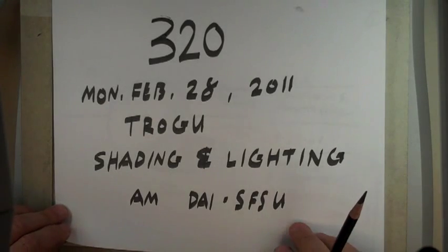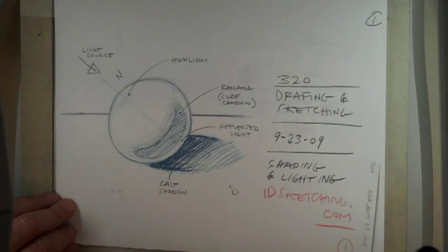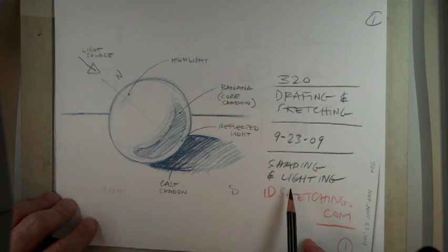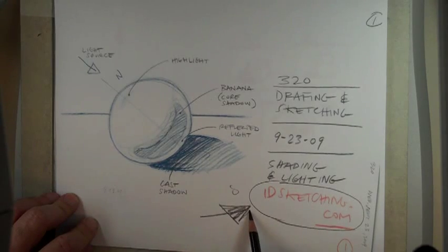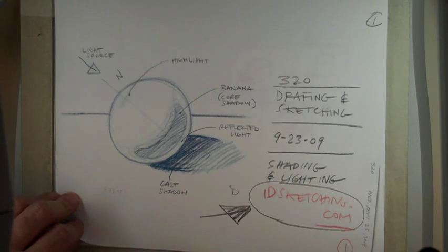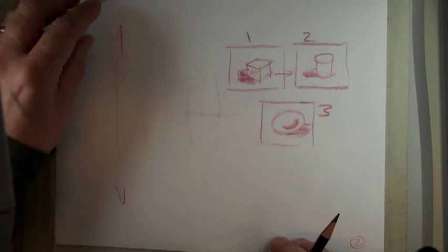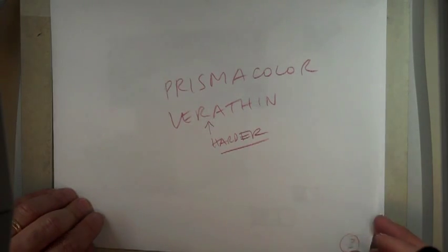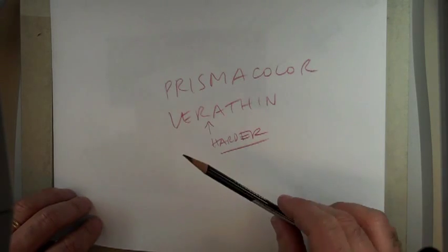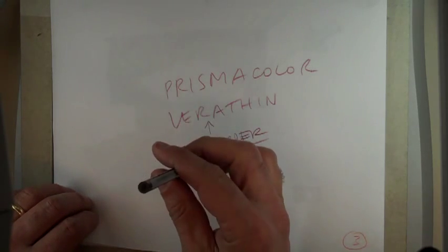Okay, so shading and lighting, just some very basics about that. One good source for shading and lighting is once again IDSketching.com. I recommend you guys go there and look at it. Just different colored pencils if you're going to ever use colored pencils. The Verithin are a little harder, the Prismacolor round ones are a little softer.